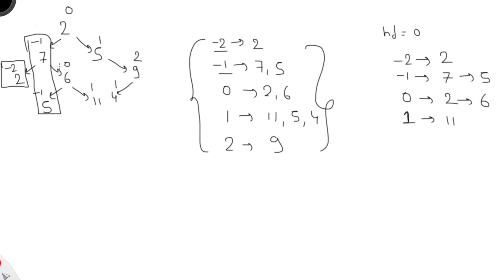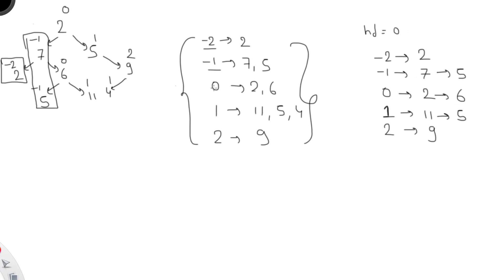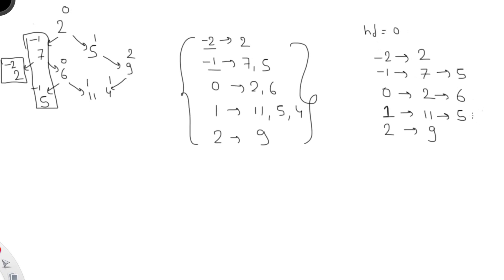Going back and then right from the root, we find node 5 at vertical height 1, so it goes into the level 1 list. Going right again gives vertical height 2. It doesn't exist in the map, so we initialize a list for key 2 and put value 9. Going left from there means key 1, so we add value 4 to the level 1 list.